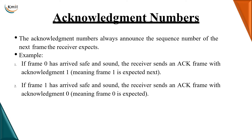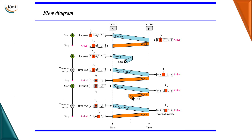Acknowledgement numbers are also numbered using modulo-2. An important thing: if you send a frame with sequence number zero and it is received safely, the acknowledgement number will be one — not to confirm receipt of frame zero, but to indicate that the receiver is now expecting frame one. Similarly, if frame one is received, the acknowledgement number will be zero, meaning the receiver now expects frame zero. Acknowledgement numbers always announce the sequence number of the next frame the receiver expects.